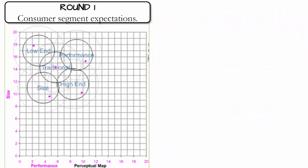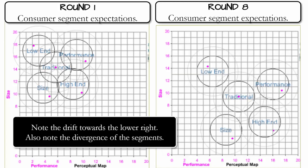The customer segments move on the perceptual map at predetermined drift rates. Market segments will not move faster to catch up with products that are better than customer expectations. Even if companies in the industry were to produce products better than what customers expect, the segments will not move faster, so there is no benefit in producing products better than what customers expect. Information on positioning of the segment centers and drift rates can be found in the Industry Conditions Report.